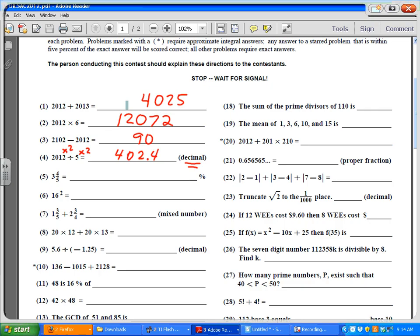3 and 4 fifths, that's 3.8. As a percent multiplied by 100, that's 380%.